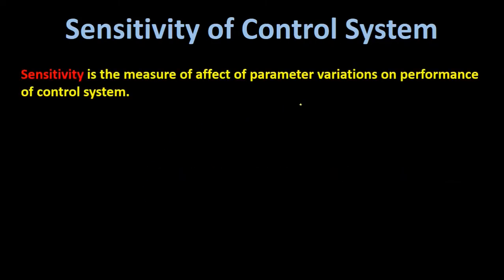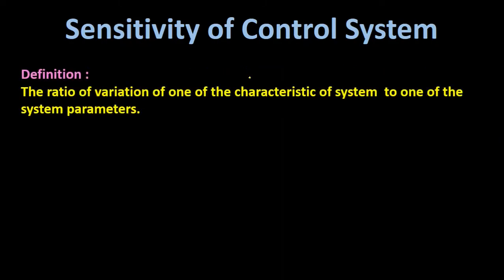Sensitivity is the measure of the effect of parameter variations on the performance of a control system. It is used to measure the effect of parameter variations in the control system. In simple language, if we want to find out how sensitive the system is for parameter variations or for external or internal disturbances, then we find out the sensitivity of the control system.